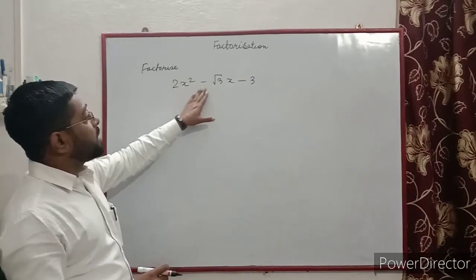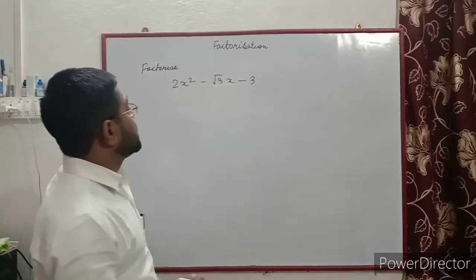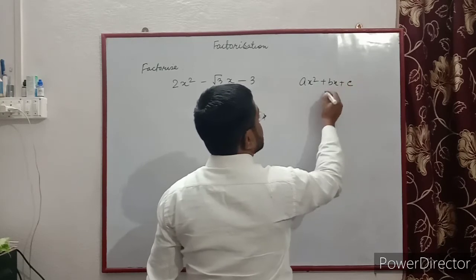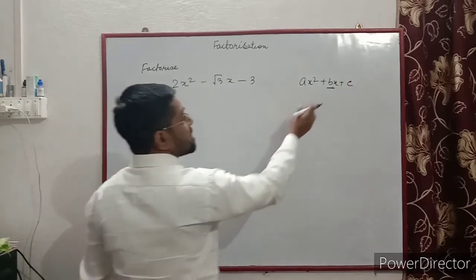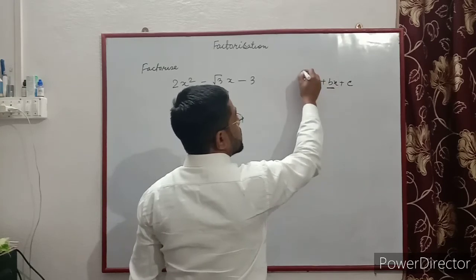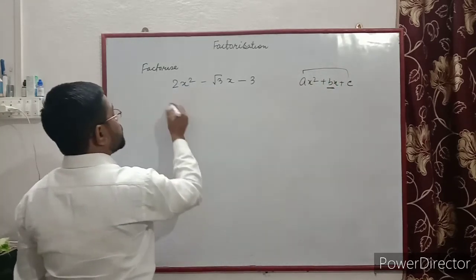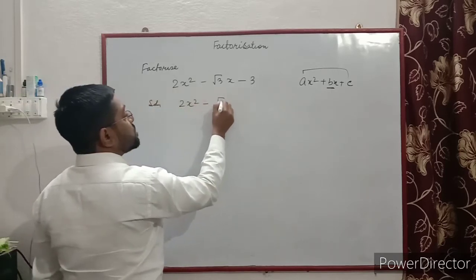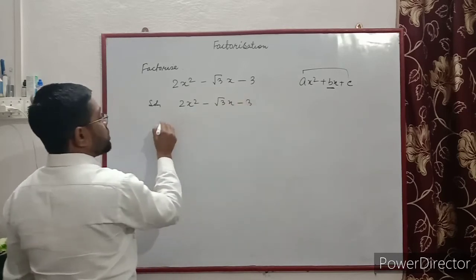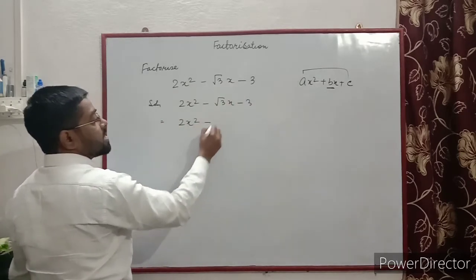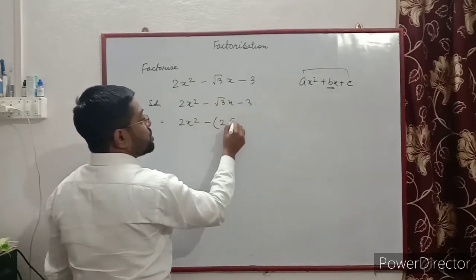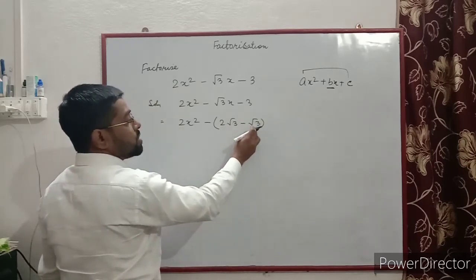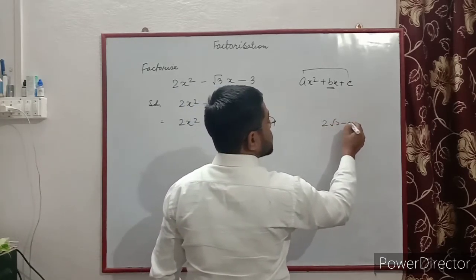Factorize 2x² − √3·x − 3. It is in the form ax² + bx + c. We know that b is split into two numbers whose sum is b and product is a·c. So we split −√3 into −2√3 and +√3, since −2√3 + √3 = −√3 and their product is −2√3 × √3.